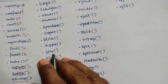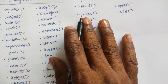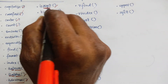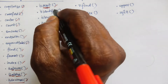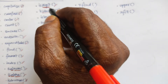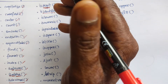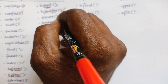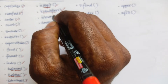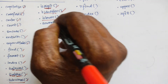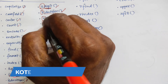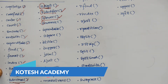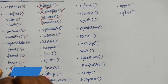Next is isdigit, which returns true if all characters in the string are digits — you can check whether you are getting all digits or not. Then isidentifier, which returns true if the string is a valid identifier. Next islower, which returns true if all characters in the string are lowercase. You can check for a particular lowercase character, identifier, digit, decimal, alphabetic, or alphanumeric value.